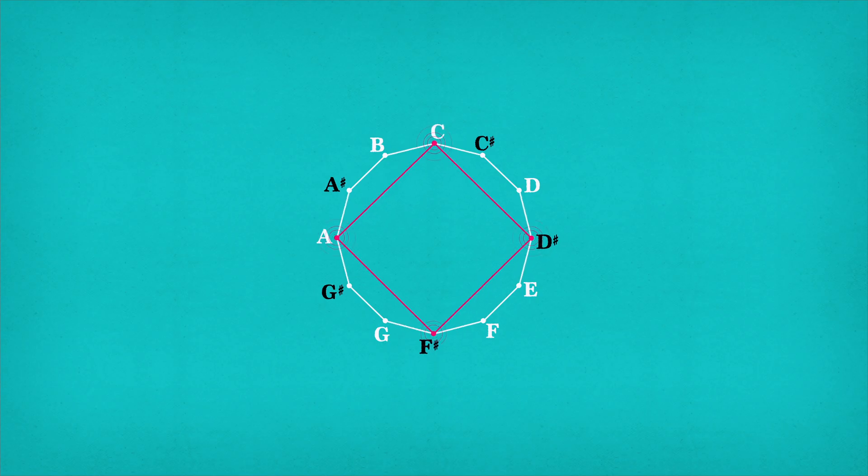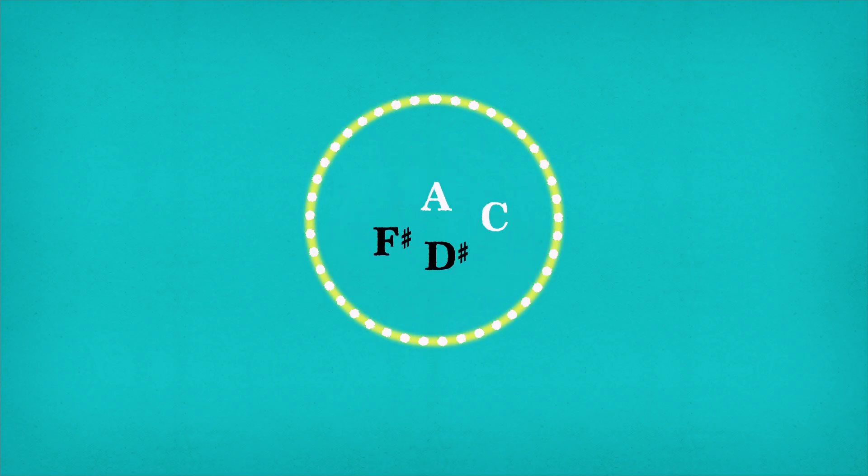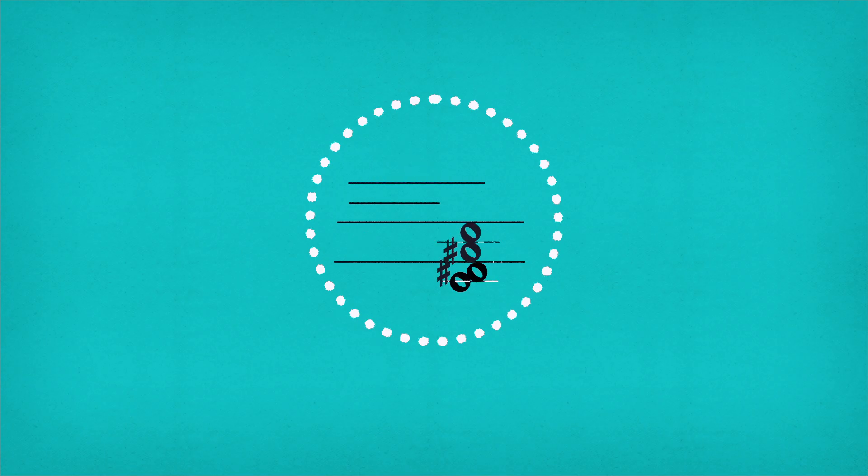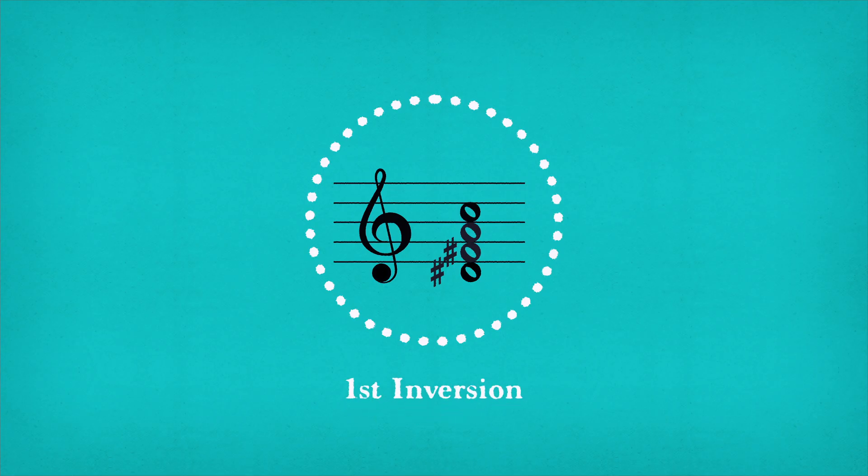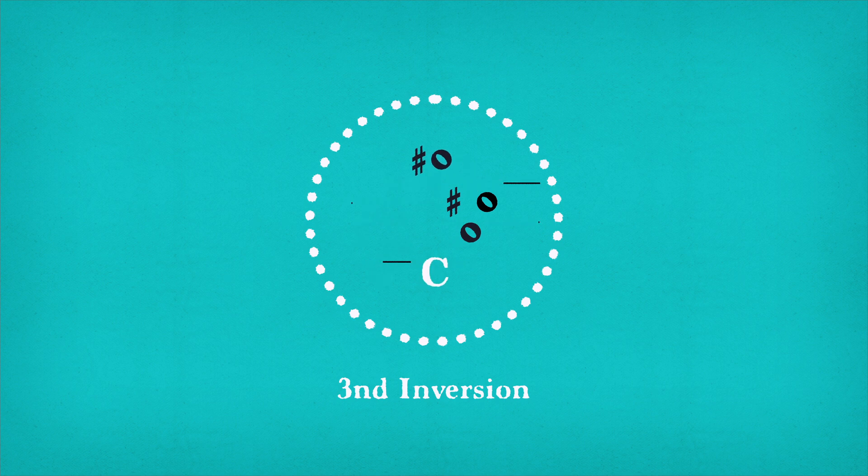Now this chord is a group whose elements are these four notes. The operation we can perform on it is to shift the bottom note to the top. In music, that's called an inversion, and it's the equivalent of addition from earlier. Each inversion changes the sound of the chord, but it never stops being a C diminished seventh.